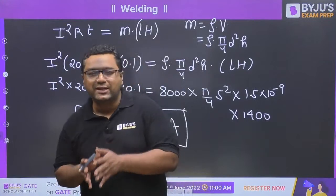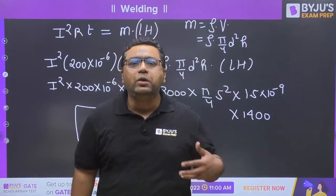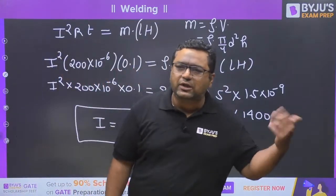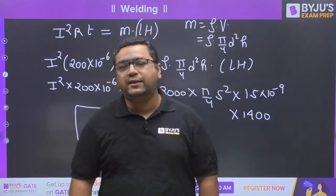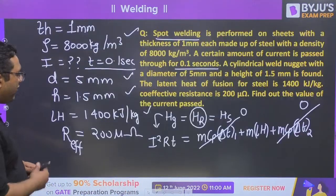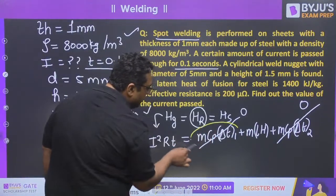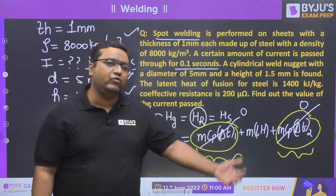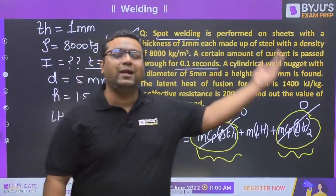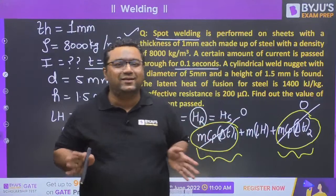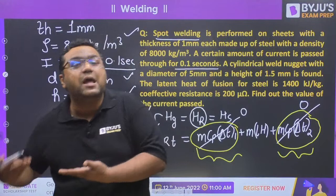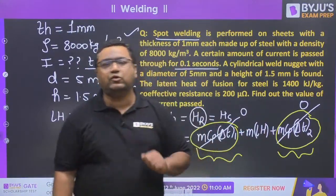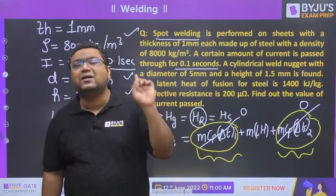Some students may ask: sir, you said resistance welding requires 10,000 to 15,000 amperes minimum, but the answer is only 4060 amperes. The reason is that we have neglected two sensible heating terms - heating plates from room temperature to melting point. If specific heat and temperature change were given, the answer would exceed 10,000 amperes. Neglecting those two sensible heatings gives a lower current value.